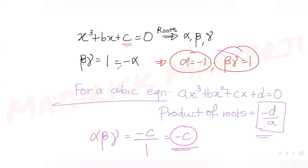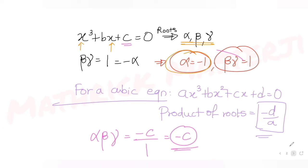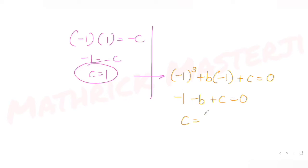Once I have c equals one, I substitute into the cubic equation. Since alpha equals minus one is a root, putting x equals minus one gives: minus one cubed plus b times minus one plus c equals zero, which is minus one minus b plus c equals zero. That gives c equals b plus one. Since c equals one, b plus one equals one, so b equals zero.